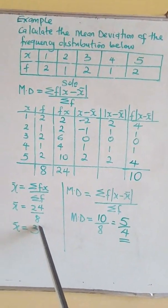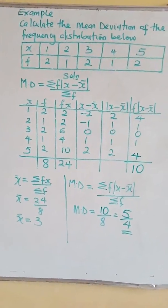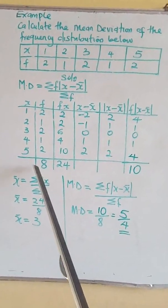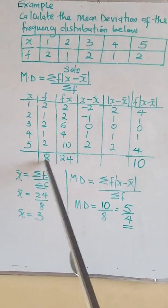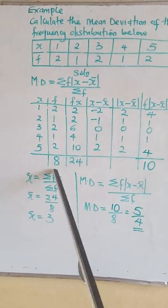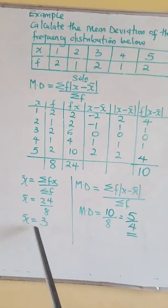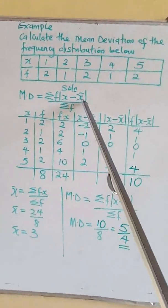So our x̄ will be 24 over 8 to give us 3. Remember I told you, you must write down the total here. It's a must you write it.